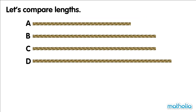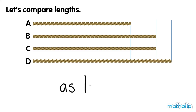Let's compare the lengths of the strings. String A is the shortest. String D is the longest. String B and C are the same length. String B is as long as string C.